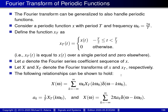With these definitions in place, I can now introduce the main result, which consists of three equations. The first and last of these three equations are both equations for big X, giving us two different ways to compute the Fourier transform of little x. The first is expressed in terms of big X subscript capital T, and the second is expressed in terms of the Fourier series coefficients a_k.